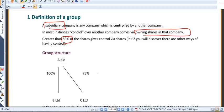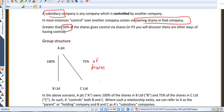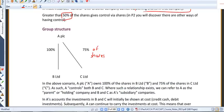If you look at the diagram here, where A owns 100% and 75% of the shares in B and C respectively, then both B and C are subsidiary companies.